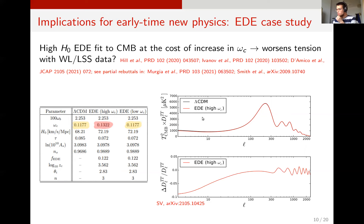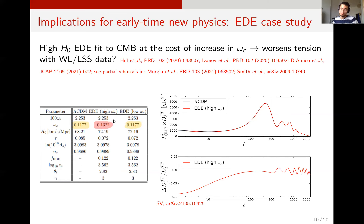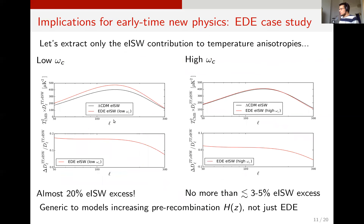If I compare Lambda CDM and EDE with high omega_C, they give essentially the same CMB power spectrum — basically indistinguishable on scales not swamped by cosmic variance. That's why EDE works at first glance. The cost is a roughly 20% increase in the cold dark matter density. It's useful to extract only the early ISW source term: if I consider the early dark energy model with a low value of omega_C, the early ISW source term is about 20% larger than Lambda CDM.